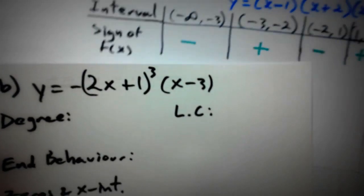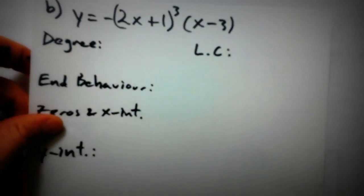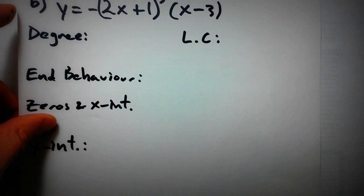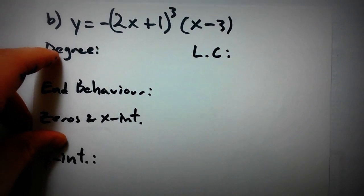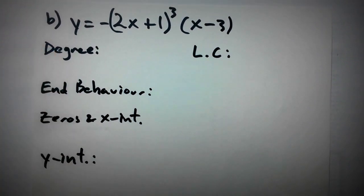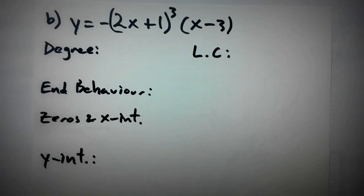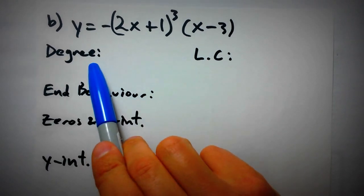Let's look at our second example: y equals negative open bracket 2x plus 1 close bracket to the power of 3, times x minus 3. They're asking us to sketch the corresponding graph. I have a grid there and I'm just going to do a rough sketch, so let's figure out the key features of this function.